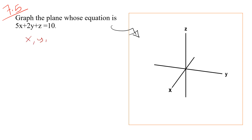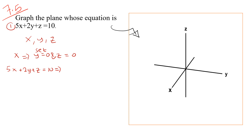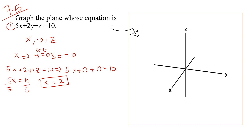We need the x-intercept, y-intercept, and z-intercept. First, finding the x-intercept: we set y equals to zero and z equals to zero. The equation we have is 5x plus 2y plus z equals to 10. Setting y and z to zero gives us 5x equals to 10, and dividing both sides by 5 gives x equals to 2. So the x-intercept is 2.